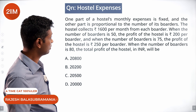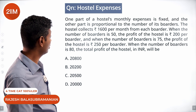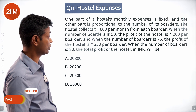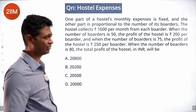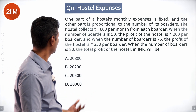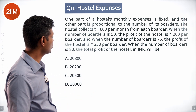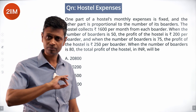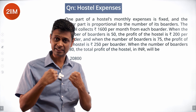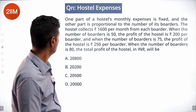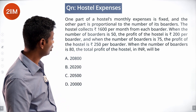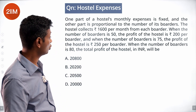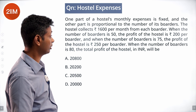One part of a hostel's monthly expense is fixed, and the other part is proportional to the number of its boarders — fixed plus variable cost. The hostel collects Rs. 1600 per month from each boarder as revenue. When the number of boarders is 50, the profit of the hostel is Rs. 200 per boarder.